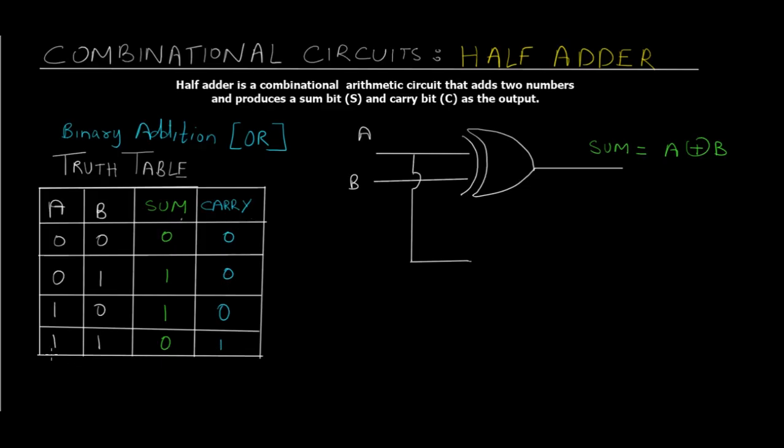You can see that the carry column is always 0 but only 1 when both the inputs are high. This case is pretty much depicted by an AND gate. In an AND gate the output is going to be 1 when all the inputs are high.